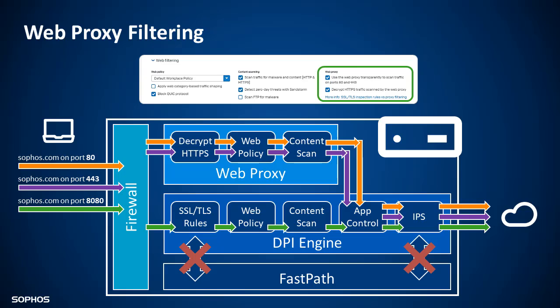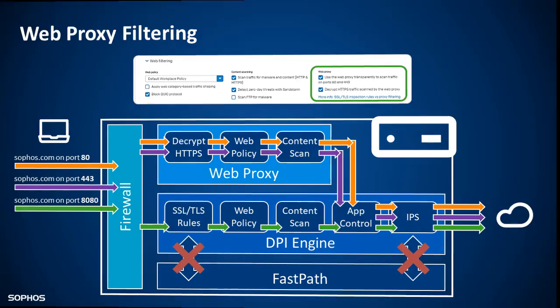The legacy web proxy is also used in explicit proxy configurations. When the web proxy is being used, none of the traffic can be offloaded to the fast path. This includes any traffic that matches identities for Sophos Labs' trusted traffic.